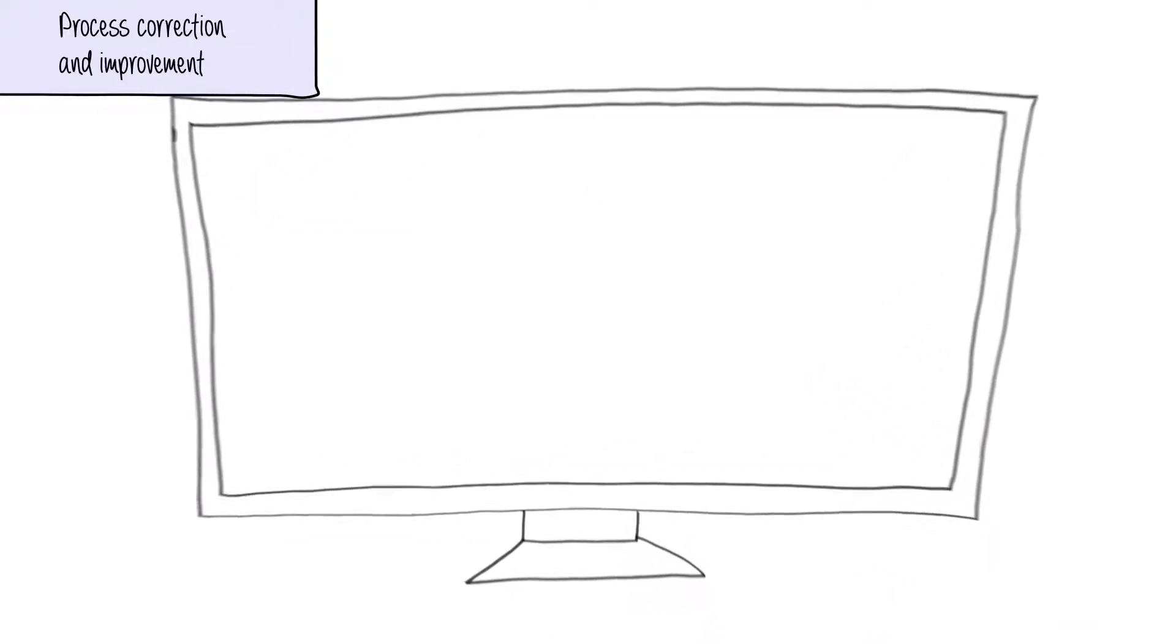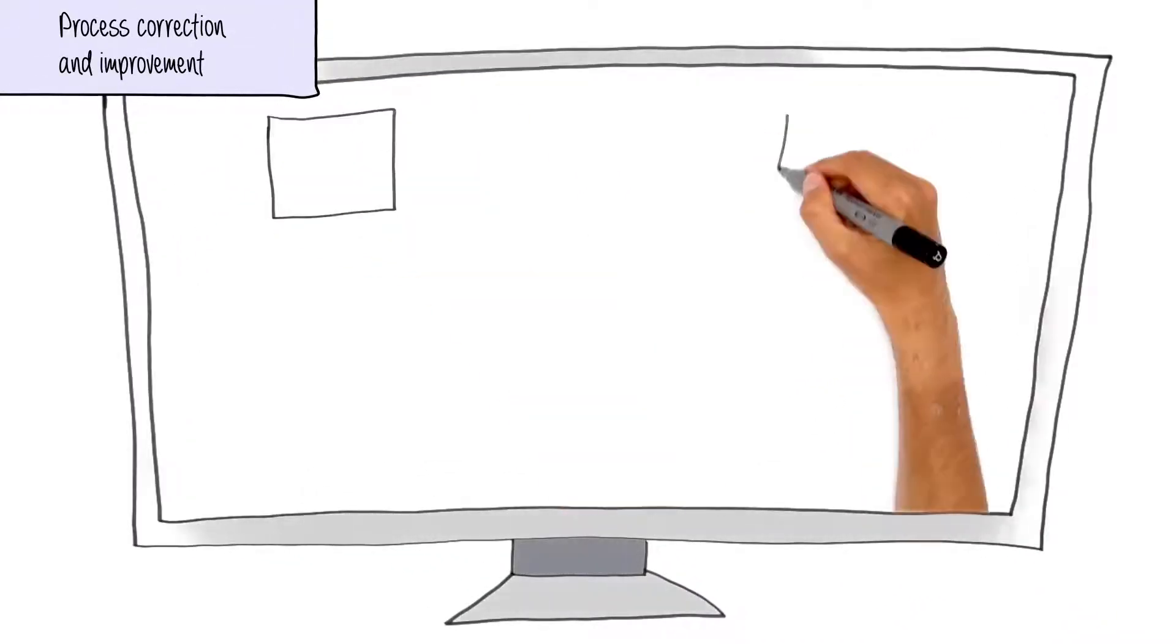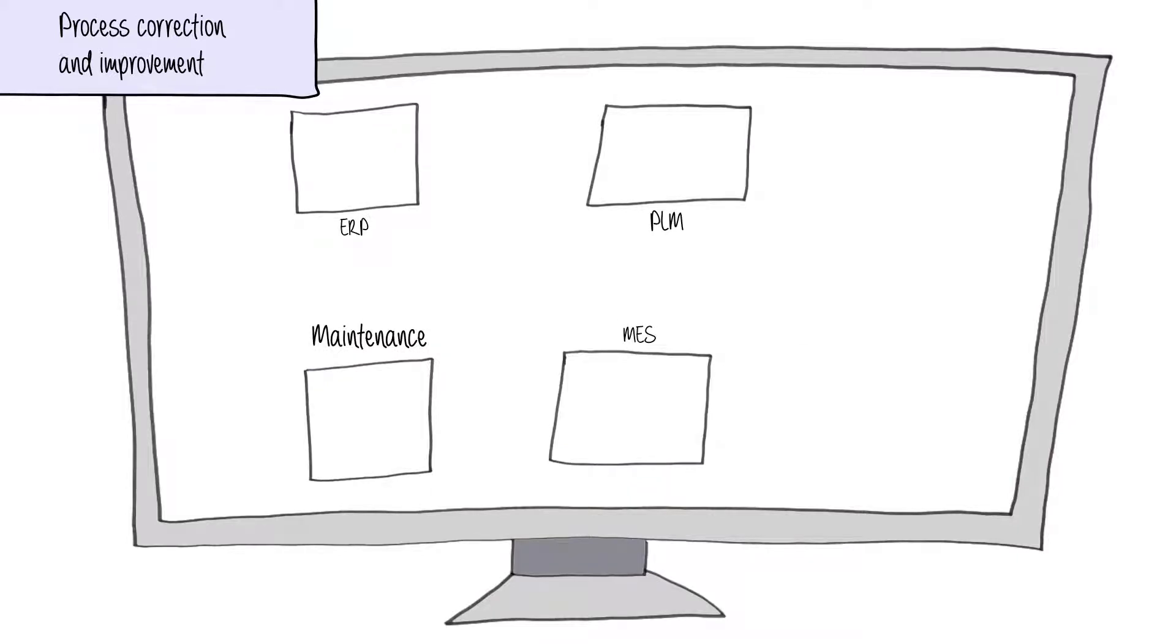We really like the way ATS-CM4D integrates with other systems. It means we can look at process parameter information. By comparing the different stages of production, we can predict which part of the plant needs maintenance or adjustment.